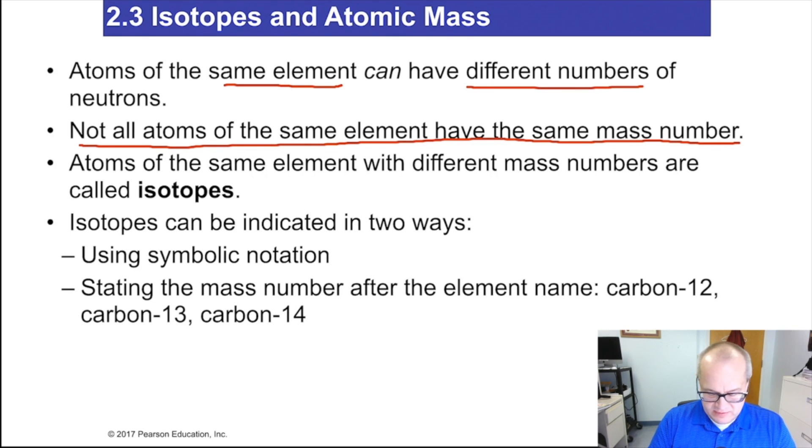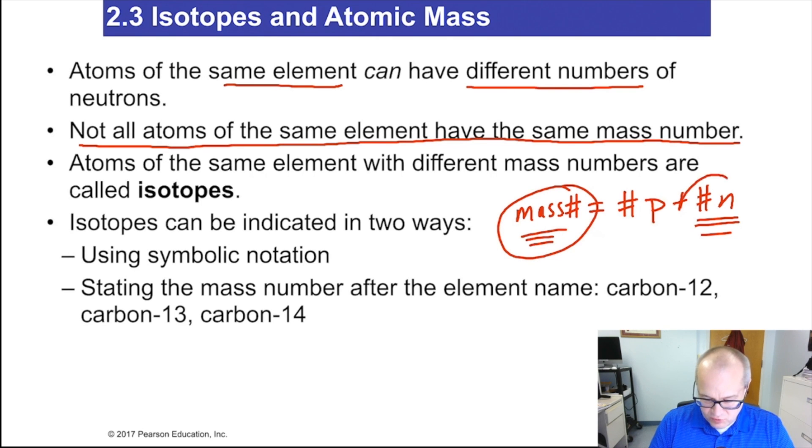That makes sense, right? Because mass number equals number of protons plus number of neutrons. So if this number's changing, the neutron number, then the mass number's changing. Atoms of the same element can have different mass numbers because the numbers of neutrons are changing.